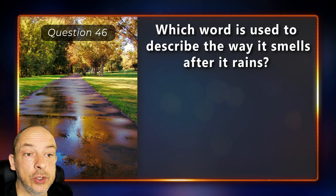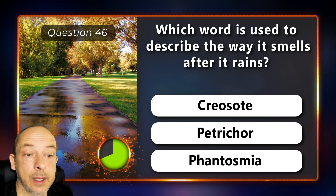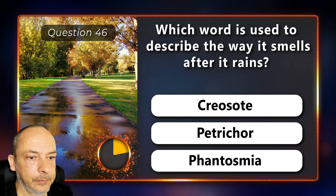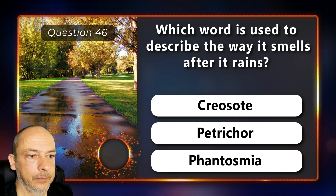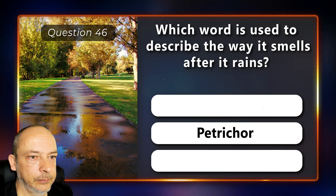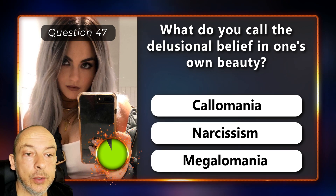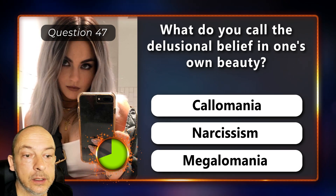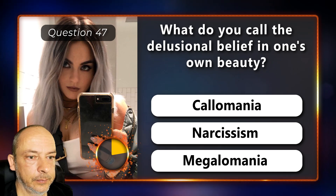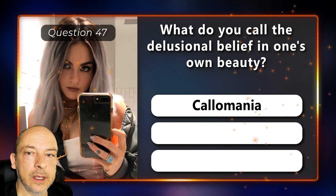Which word is used to describe the way it smells after it rains — is it creosote, petrichor, or phantosmia? It's called petrichor. What do you call the delusional belief in one's own beauty — calomania, narcissism, or megalomania? It's called calomania.